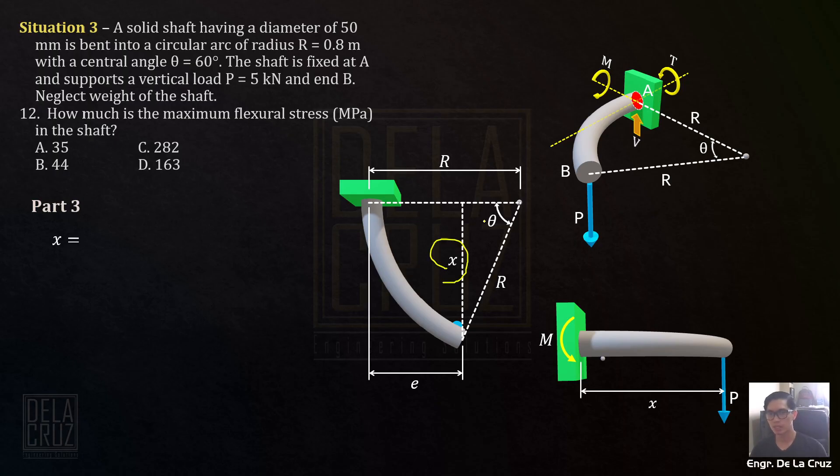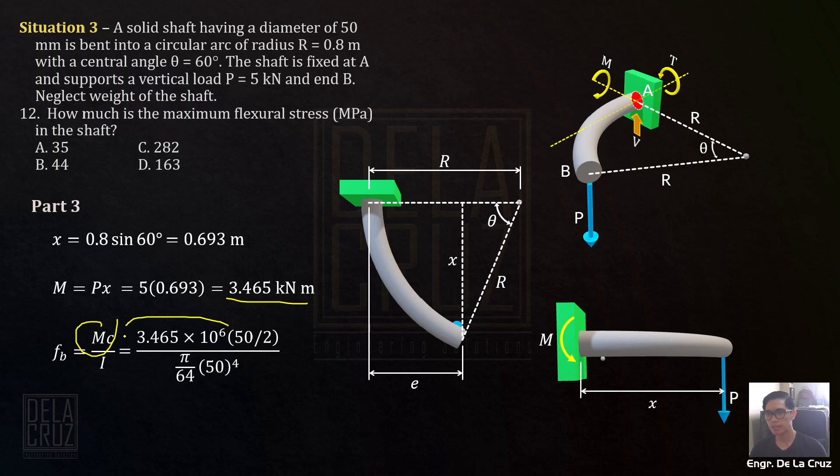Solving for x first, using the same triangle here, x is R sin theta. R is 0.8 sin of 60. You have 0.693 meters. The bending moment is P times x, which is 5 kilonewtons times 0.693, giving this value in kilonewton meters. Maximum bending stress, call it FB, is MC over I. Moment in newton millimeters. C is half of the cross section, the axis of bending, farthest distance, which is just half the diameter, 50 over 2. Inertia for solid circular section is π over 64, diameter raised to 4. The answer is 282.35 MPa.